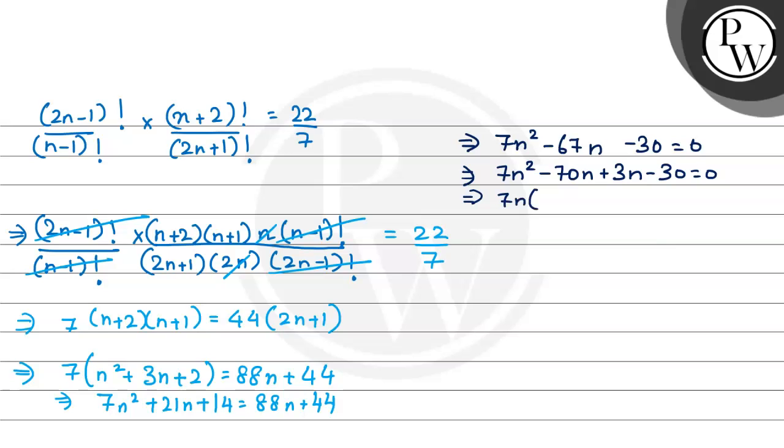Factorize it: 7n common, n minus 10, plus 3 common, n minus 10 is equal to 0. So the factors are 7n plus 3 and n minus 10 equal to 0. So n value is minus 3 by 7, and n minus 10 equals 0, so n is equal to 10.